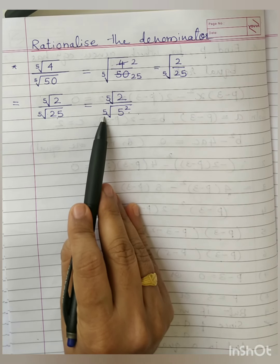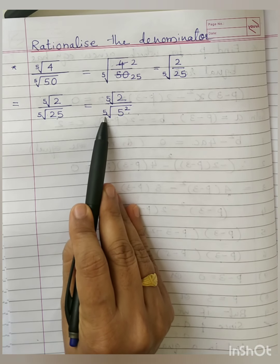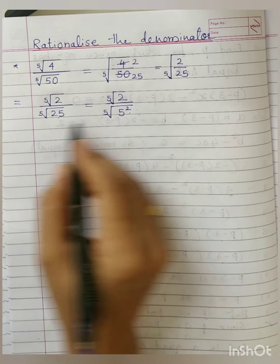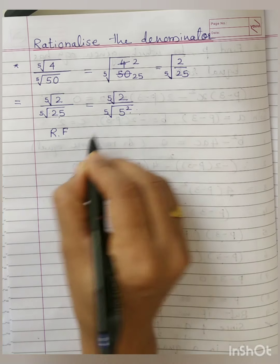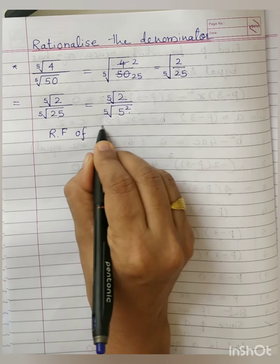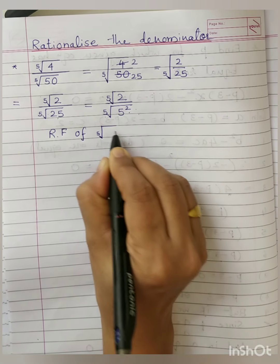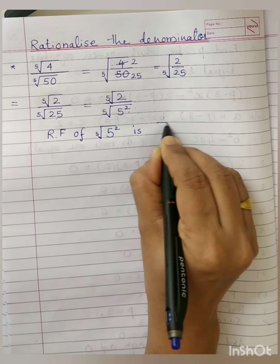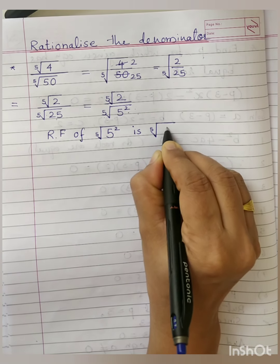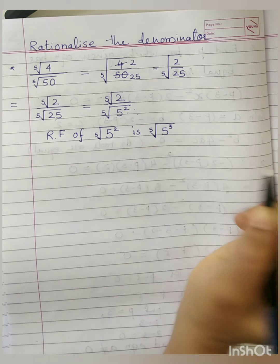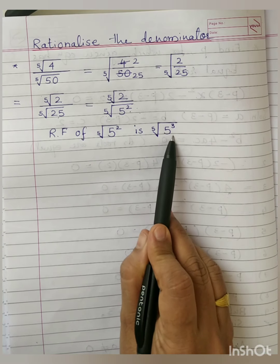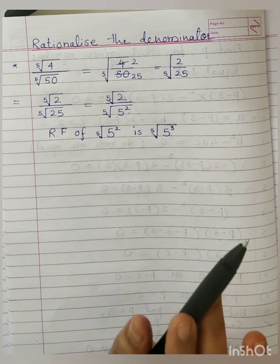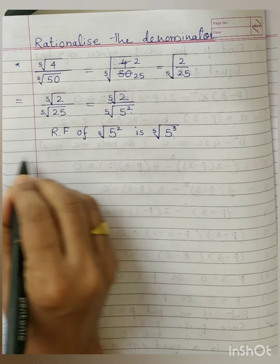This number is going to help us find the rationalizing factor. Since the order of this denominator is five, the index of five should also be five in order to make this a rational number. What will be the RF of the fifth root of five raised to two? It will be the fifth root of five raised to three — why three? So that when you multiply, five squared into five cubed will give five raised to five.